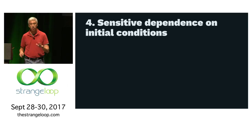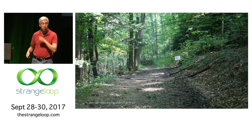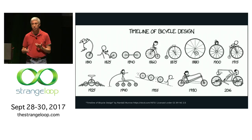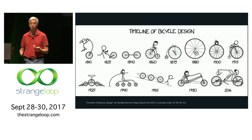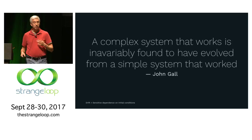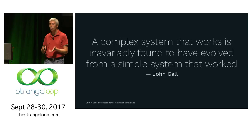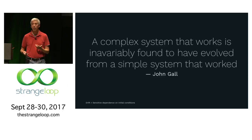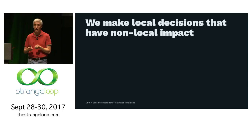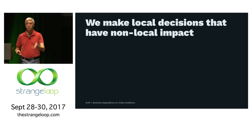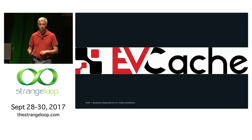The last concept in drift is sensitive dependence on initial conditions — also called path dependence or history. Systems don't get built out of nowhere; they evolve over time from smaller systems. Gall observed that if you find some large complex system, it didn't just get created that way — someone made a small system, it worked, they grew it, and it became large. People made decisions a long time ago that affect you now. The problem is we can only make local decisions. If you're writing code and deciding how to respond to a particular error condition, you're making a local decision that can have nonlocal impact somewhere else entirely.